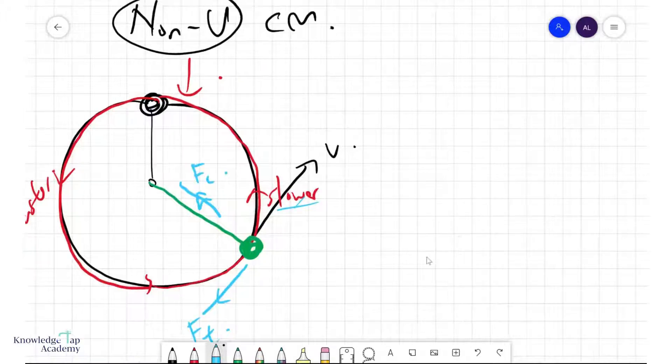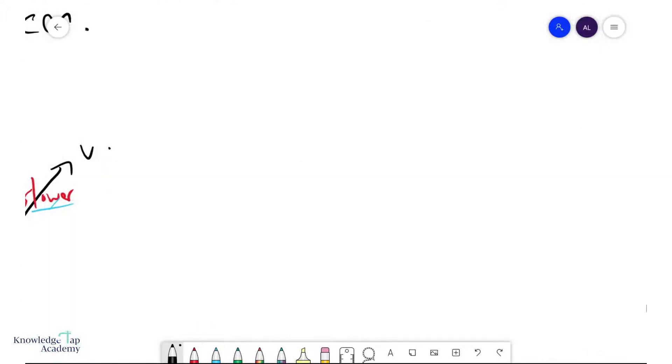And so let us consider a pendulum bob. Let's say it's here, it currently is down there. How do we analyze something like this?